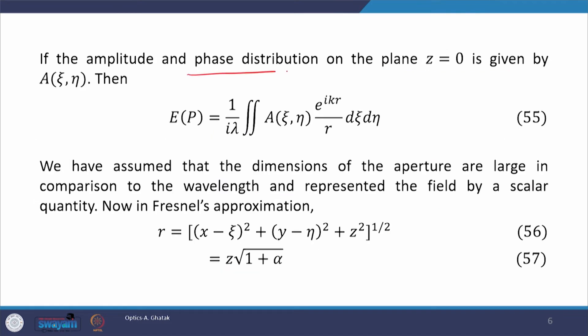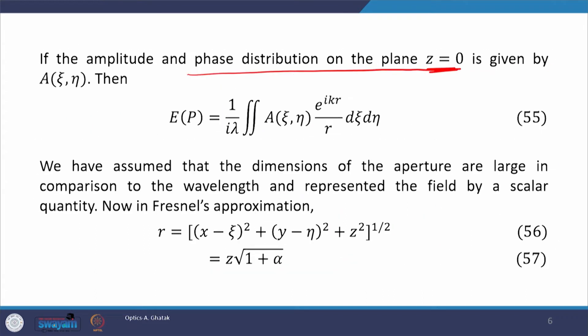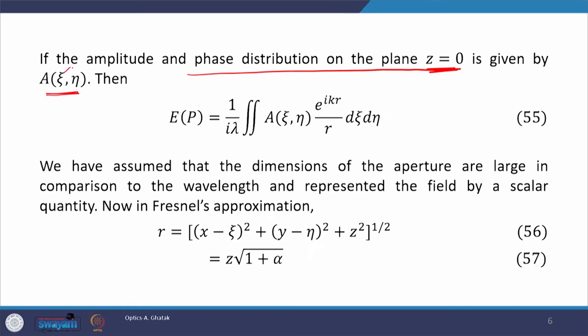The amplitude and phase distribution on the screen plane — at the screen plane we have z = 0. Then A would be a function of the 2 variables, so we replace A with these two functions, giving equation 55. We have assumed that the dimensions of the aperture are large in comparison to the wavelength, and the field is represented by a scalar quantity without discussing polarization.